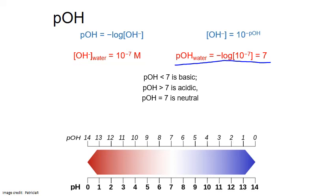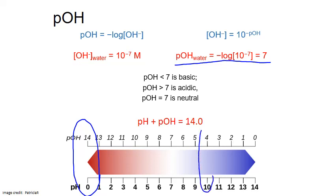There is an important relationship between pH and pOH: the sum of the pH and pOH values for any aqueous solution always equals 14. So if a very acidic solution has a pH of 0, its pOH is 14. If a basic solution has a pH of 10, its pOH is 4. Whatever the pH and pOH values for any one solution, they must add up to 14. This relationship holds for any aqueous solution at 25 degrees Celsius.